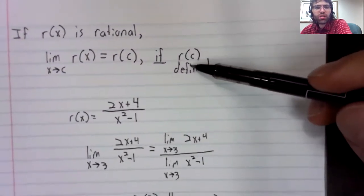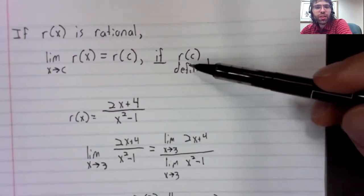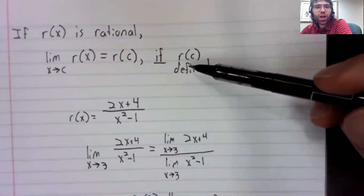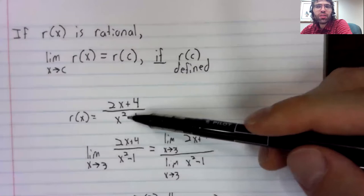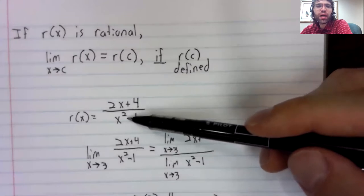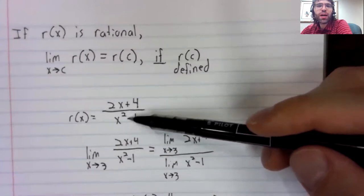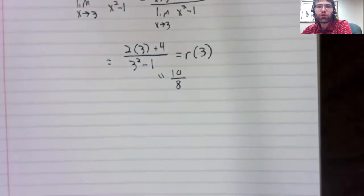This comes from the fact that we might plug c in to r of x, and it might not be defined. We might get a division by zero error.